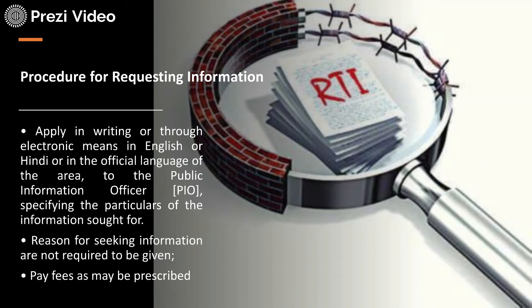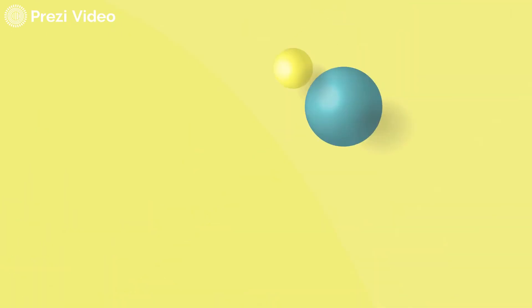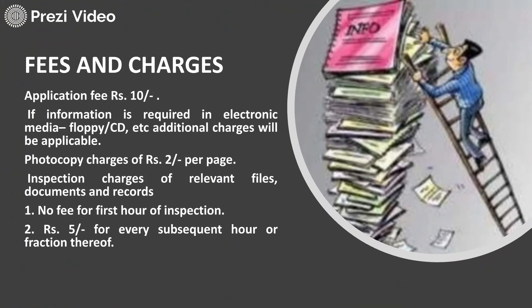For state governments using the offline mode, you have to apply in writing or through electronic media in English, Hindi, or the official language of the area to the Public Information Officer (PIO), specifying the particulars of the information sought. You may also mention the reason for seeking the information, though it is not mandatory. The application must be accompanied by a fee — the fee is very nominal at rupees 10. For information in electronic media, floppy, or CD, or for photocopies, additional charges of rupees 2 per page apply.